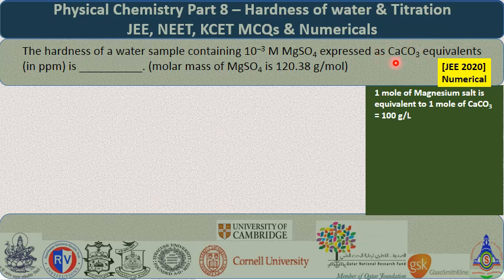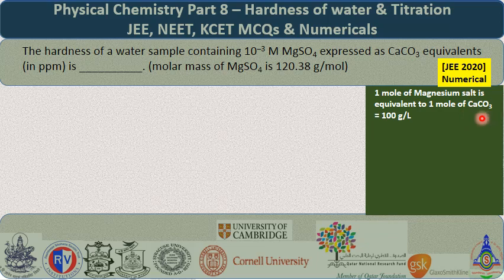Hardness is expressed as calcium carbonate. The basic principle is: 1 mole of any material is equivalent to 1 mole of another. So 1 mole of any soluble salt of magnesium or calcium present in water is equivalent to 1 mole of calcium carbonate, which equals its molecular mass of 100. Calcium carbonate is chosen because its molecular mass is the simple whole number 100. Though calcium carbonate is insoluble in water, it is used to express hardness — because of this whole number 100.